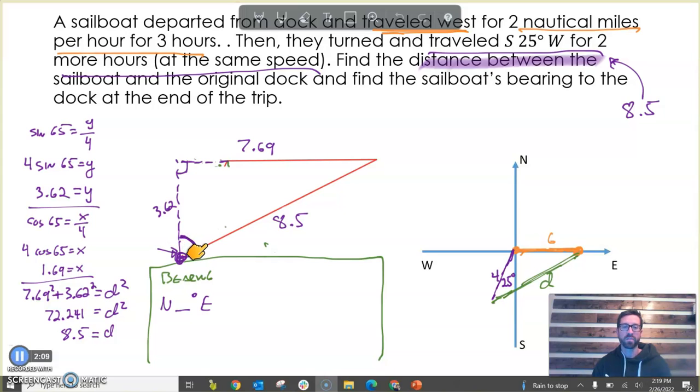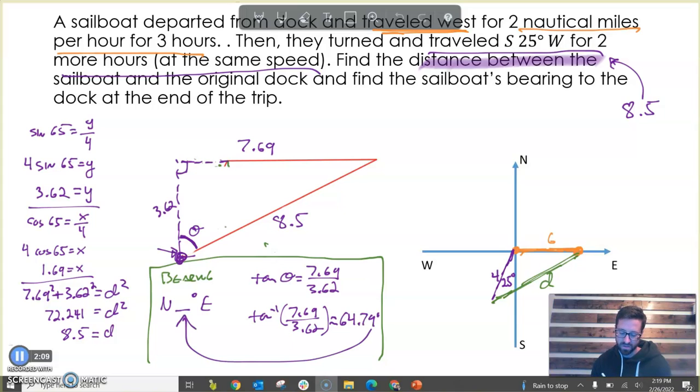And so it's going to be north something degrees east, and we need to find this angle right here. Well, we have tools for doing that. We have an inverse trig. So if I just call this angle right here theta, we know the opposite side in my right triangle, and we know the adjacent side in my right triangle. So I know that tangent of theta equals opposite over adjacent. And therefore, tan inverse of opposite over adjacent, the calculator is going to spit out our angle, which is roughly 64.79 degrees. That means that our bearing is going to be north 64.79 degrees east.